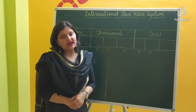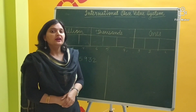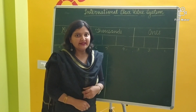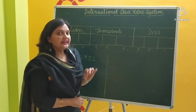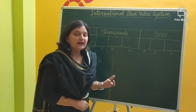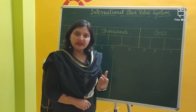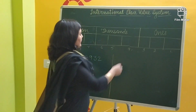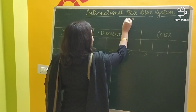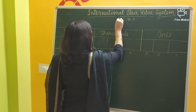In my previous video I told you about the Indian place value system. Just to remind you, in the Indian place value system, whenever we have to write an 8 or 9 digit number, we use 4 different periods: ones, thousand, lakhs, and crore.